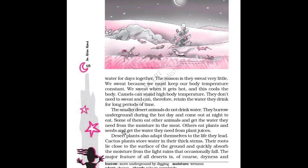Others eat plants and seeds and get the water they need from plant juices itself. Desert plants also adapt — adapt means change themselves — to the life they lead. Cactus plants store water in their thick stem. Their roots lie close to the surface of the ground and quickly absorb the moisture from the light rains. Moisture means water in small droplets on the surface or present in the air itself. They absorb moisture from light rains — that means occasional rains that don't happen regularly.